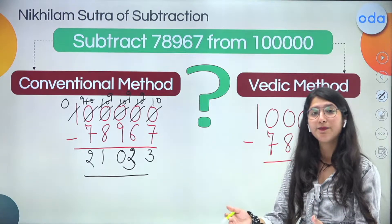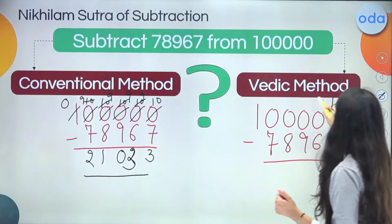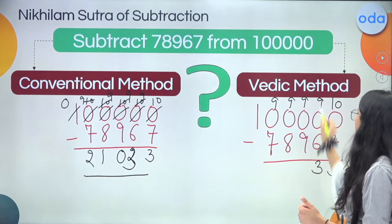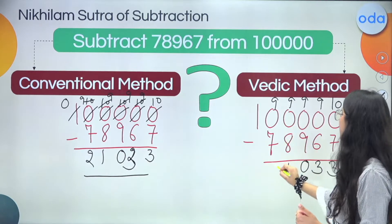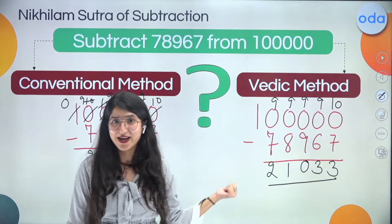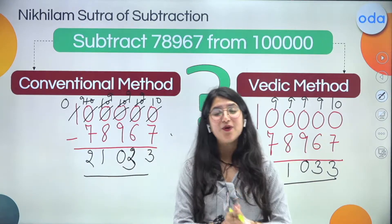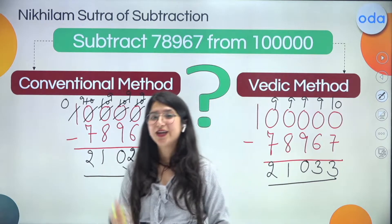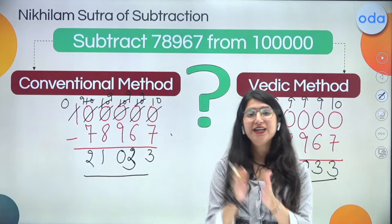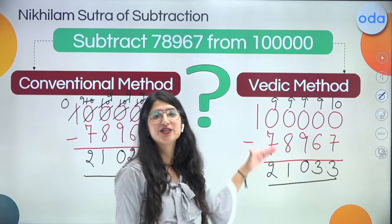When we do Vedic maths, we simply apply: last from 10, all from 9. So: 10, 9, 9, 9, 9. What is 10 minus 7? It is 3. 9 minus 6 is 3. 9 minus 9 is 0. 9 minus 8 is 1. 9 minus 7 is 2. We got the same answer — but so fast! So which one is better, conventional or Vedic? In the conventional method there was a lot of work and mess, whereas this is clean and we solved it so fast.